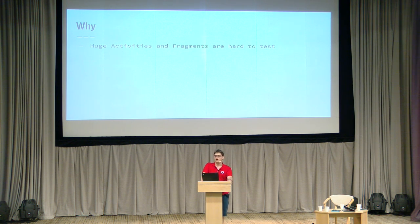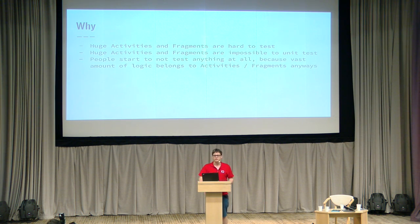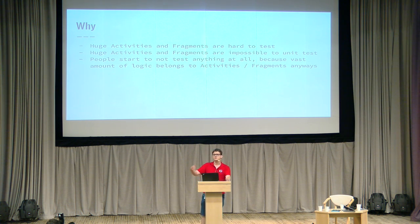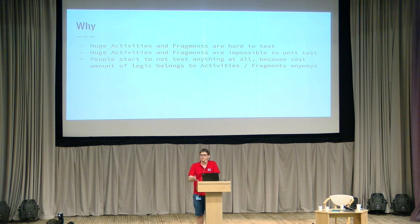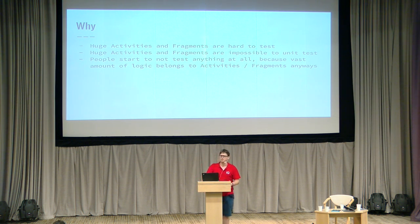Why is putting logic in activities and fragments hard? It's hard to test — almost impossible to unit test your logic if it stays in the fragment in private methods doing many responsibilities. Once you have that, people start to ignore testing altogether. There are some classes that are like pure functions with fixed input and output that could be easily unit tested, but people say: why write tests at all if the majority of our logic is sitting inside activities or fragments? Half a percent of code coverage covering some non-critical code won't change anything, so people tend to not test their applications automatically at all.